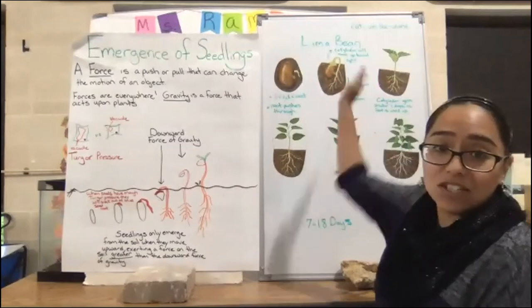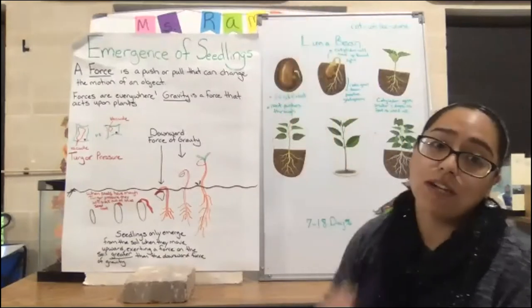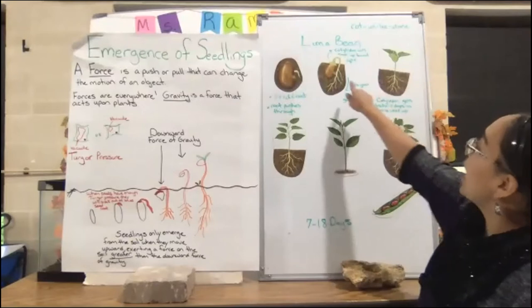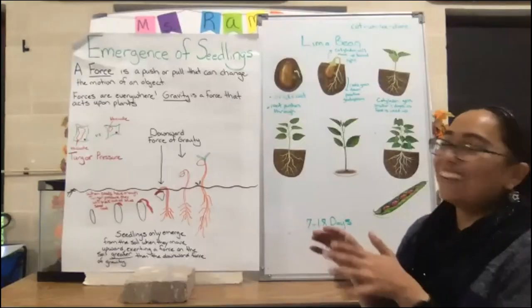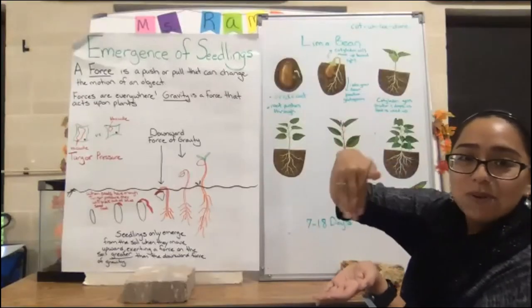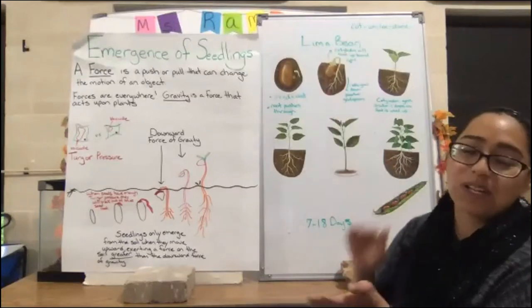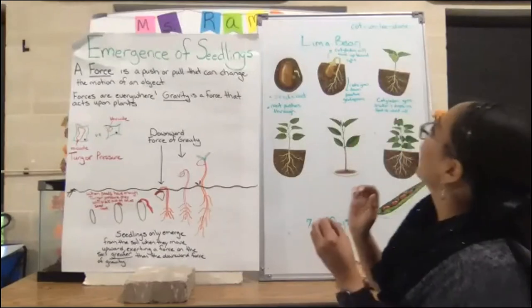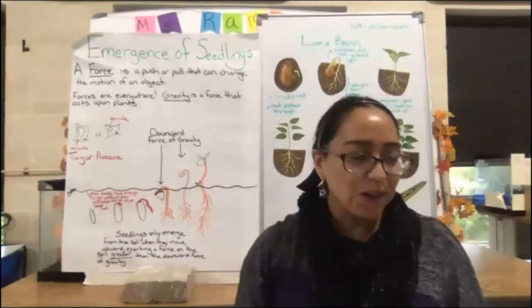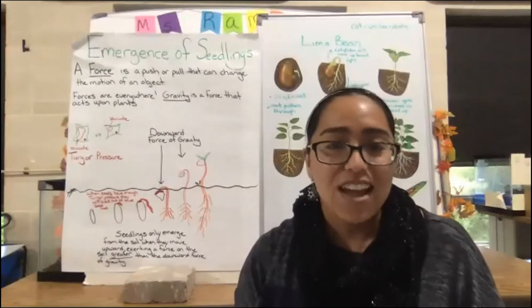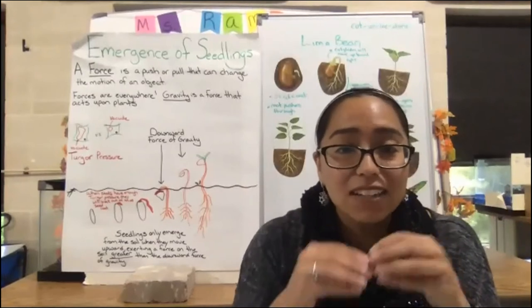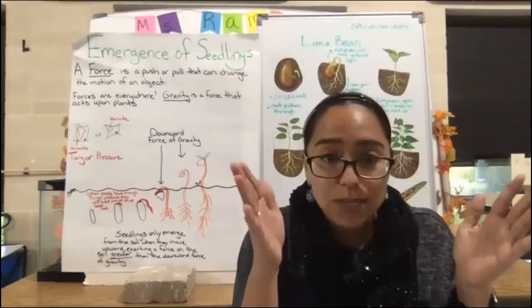When the seed starts to germinate, it's going to grow up — growing against gravity. We call that negative geotropism because it's going against gravity. Once the root starts to grow down, the cotyledon will eventually move its way up because it's going toward the light, which is called phototropism. The cotyledon is an important part of a seedling because it actually stores energy. Once the new plant has used up all the energy in the cotyledon, the cotyledon may drop off and the new true leaves will start to form.